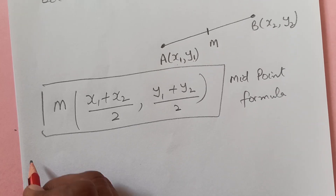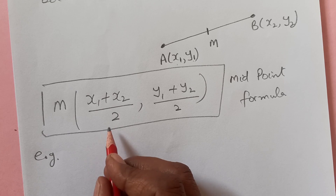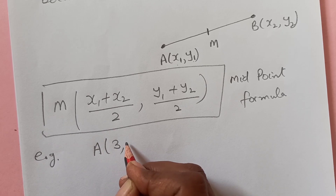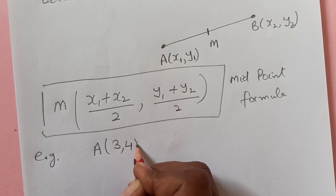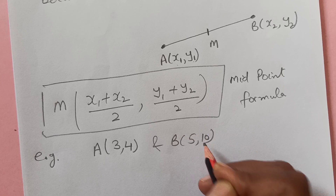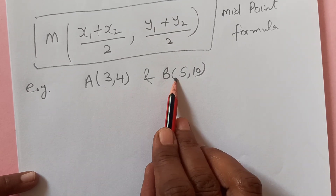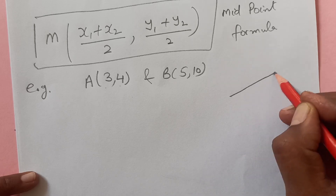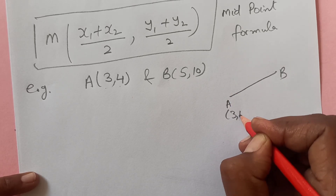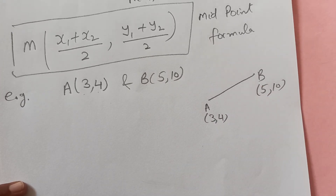So now I can take one example. Find the midpoint of the points joining the line: A is (3, 4) and B is (5, 10). So now we have x1, y1 and x2, y2. This is our line A, B — coordinates of A are (3, 4) and B is (5, 10).